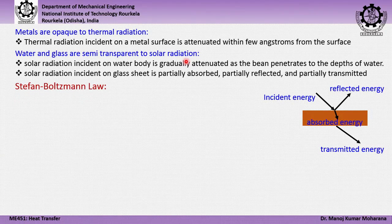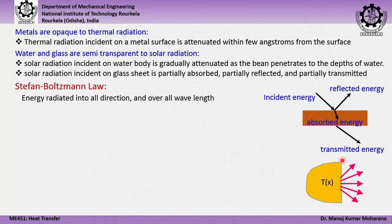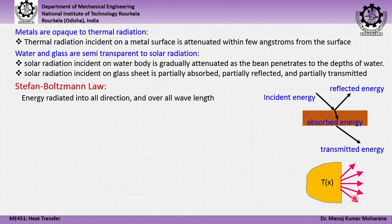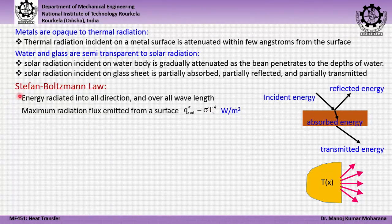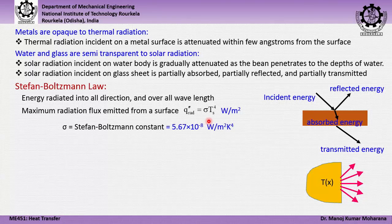The Stefan-Boltzmann law gives the maximum radiation flux emitted from a surface at temperature Ts: the blackbody emissive power Eb = σ·Ts⁴, where σ = 5.67 × 10⁻⁸ W/m²·K⁴ is the Stefan-Boltzmann constant. This shows that the radiation flux is directly proportional to the fourth power of the surface temperature. The surface is assumed to be an ideal black body emitting this energy per unit area.